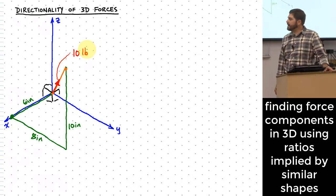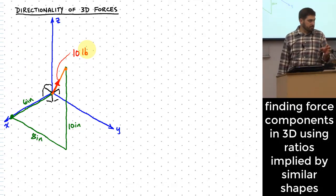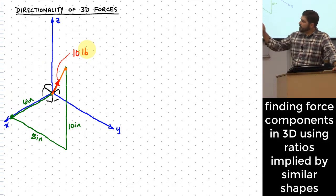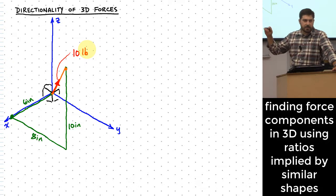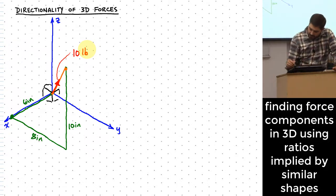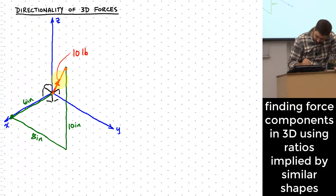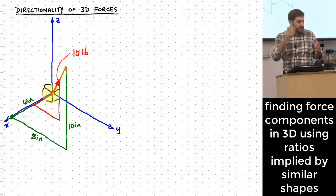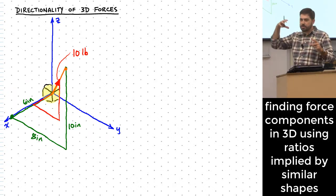How do I find the components of that force? You've got the six and eight inch lengths, so you can solve for the hypotenuse to find the distance between the origin and the endpoint. We know those lengths construct a shape in three dimensions that is six wide, eight long, and ten high. We can construct a similar shape by scaling each of those lengths proportionally.